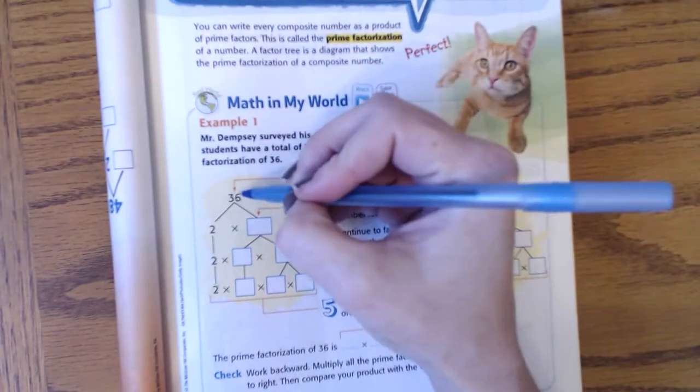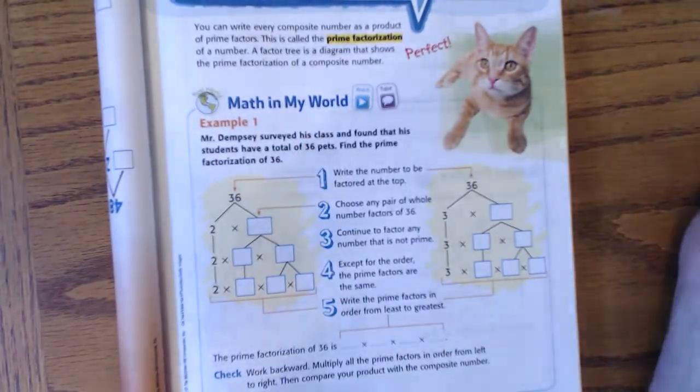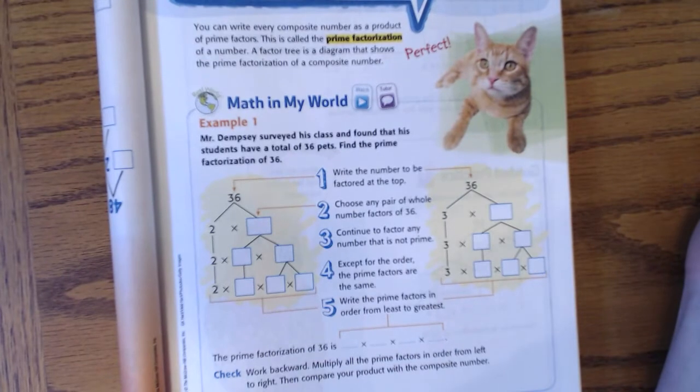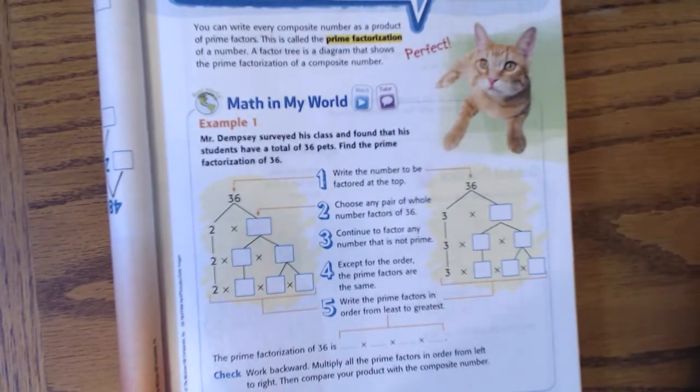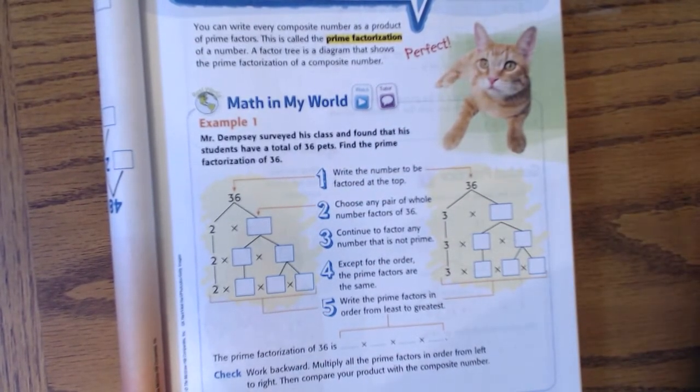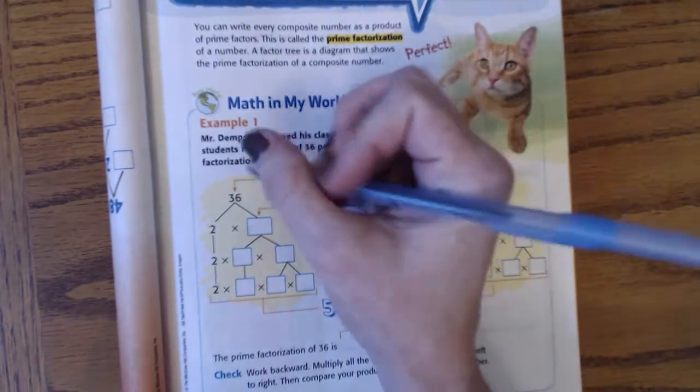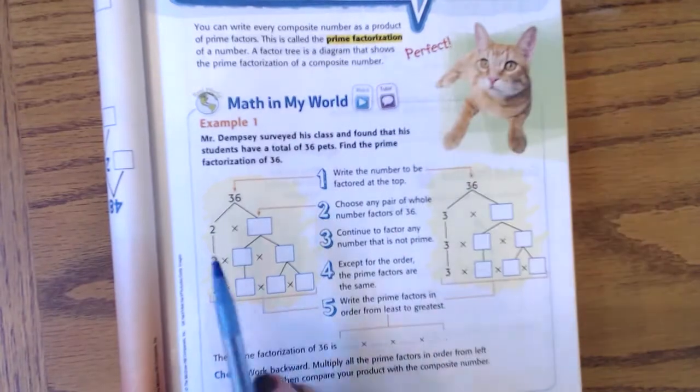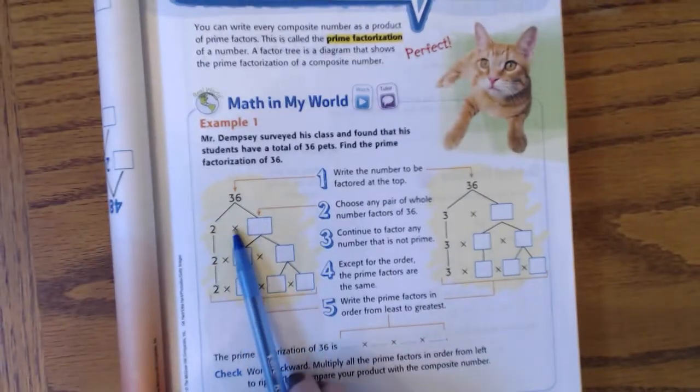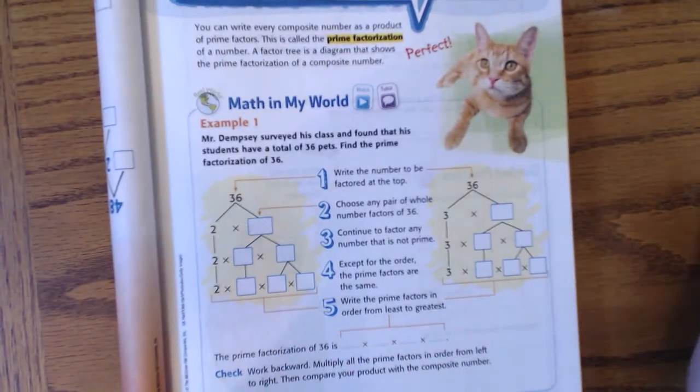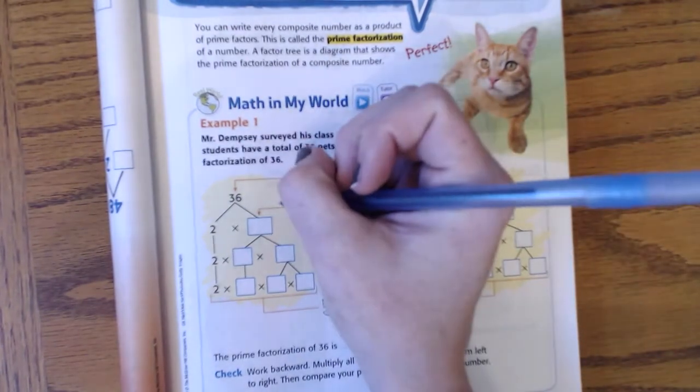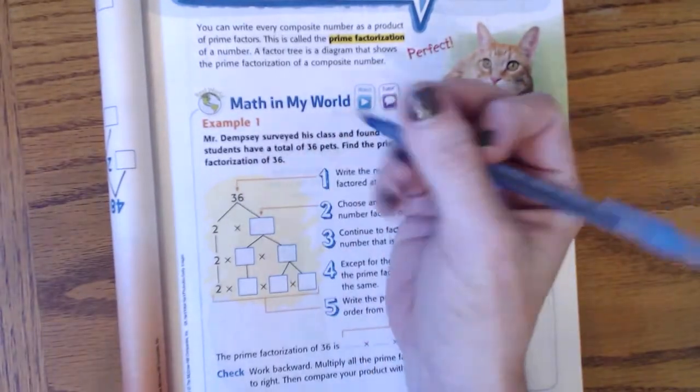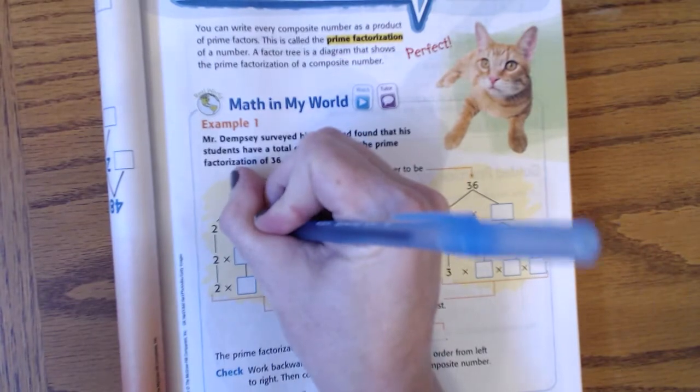So we have an example of 36, and you can break 36 down many different ways. Here are two examples, and we'll show you that no matter how you break 36 down, you will end up with the same prime factorization. So 36 is broken down by 2 times what? So I have to think of what times 2 gives me 36, and that is 18.